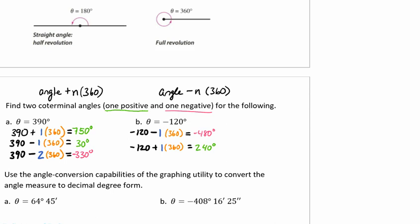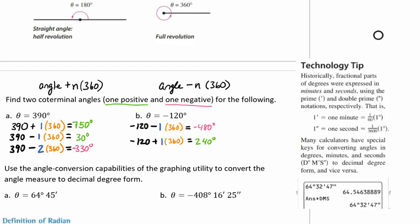Let's move on to a different type of example. So our next example says, use the angle conversion capabilities of your graphing utility to convert the angle measures to decimal degree form. We see that our first example says theta equals 64 degrees and 45 minutes. And example B says theta equals negative 408 degrees, 16 minutes and 25 seconds. Well, historically, fractional parts of degrees were expressed in minutes and seconds using the prime and the double prime notations. So one minute would be 1/60th of one degree, and one second would be 1/3600th of one degree.